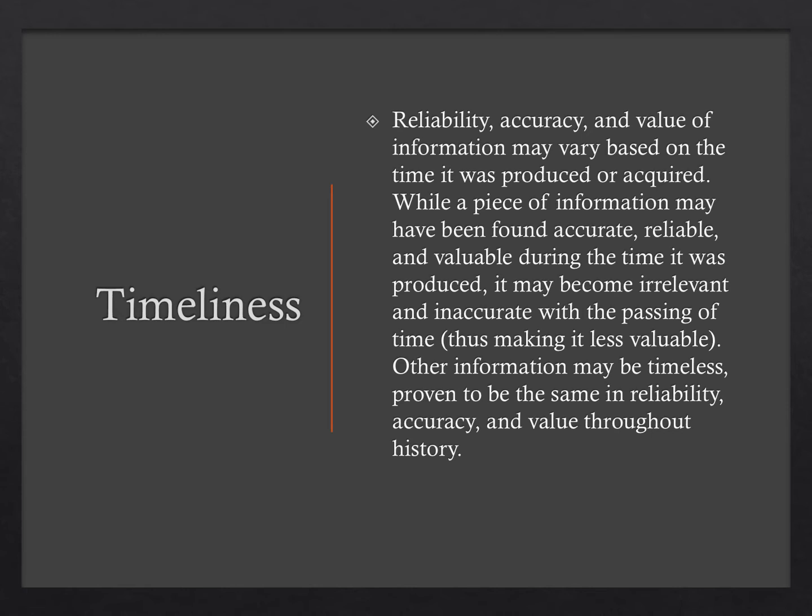Timeliness: Reliability, accuracy, and value of information may vary based on the time it was produced or acquired. While a piece of information may have been found accurate, reliable, or valuable during the time it was produced, it may become irrelevant and inaccurate with the passing of time, making it less valuable. Other information may be timeless, proving to have the same reliability, accuracy, and value throughout history.